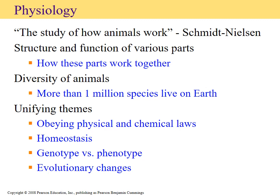Part of what you're going to notice is that there's lots of diversity — we've identified over a million species on Earth alone, and every day more come along. But we also see that there are some unifying themes that all living entities tend to share. Chapter one will examine these themes: the physical and chemical laws living entities follow, homeostasis, the relationship between genotype and phenotype, and how evolutionary changes contribute to species.